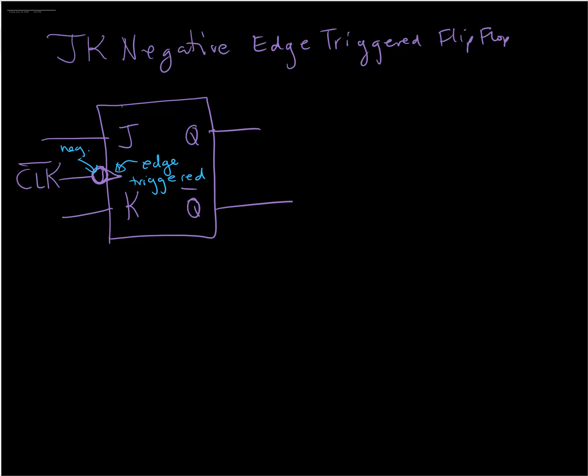And what that means is that this J, K flip-flop is going to respond to inputs on the falling edge of the clock. So when the clock makes this downward transition from high to low, that's the negative edge that it is being triggered on.